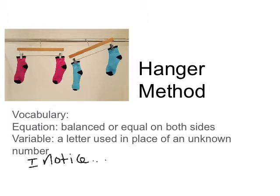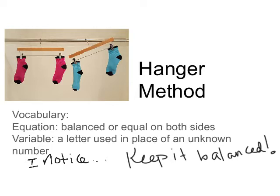Notice that one hanger looks balanced and the other doesn't. For the red socks, they must weigh the same amount so it's perfectly balanced. For the blue socks, one weighs more than the other - maybe it has marbles in the toe. All we know is the blue one isn't balanced and the red one is. When we use the hanger method, we always want to keep things balanced.